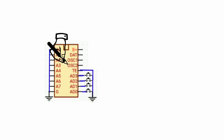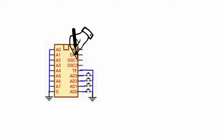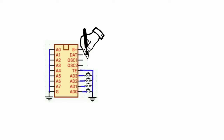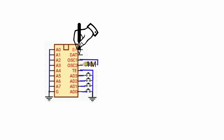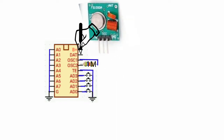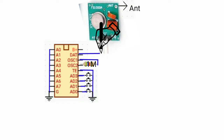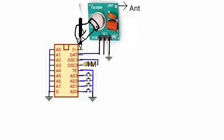Oscillator 2 and oscillator 1 will be connected to a 1 megaohm resistor. Then connect the data out to the data in of the transmitter.